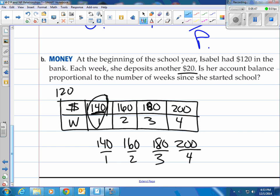Do they all equal the same value? Are they a constant ratio? Well, I hate to say it, but these are not the constant ratios that we thought they were. They do not equal each other. They're all actually different. So we would say that it's non-proportional. Technically, you would say her account balance is non-proportional to the number of weeks since she started school.